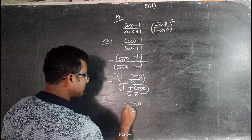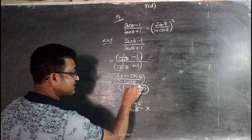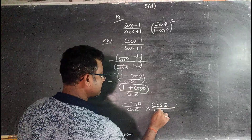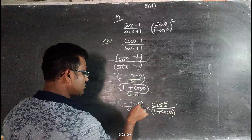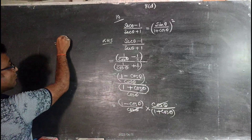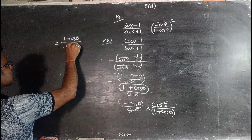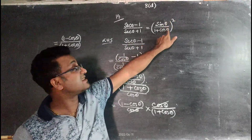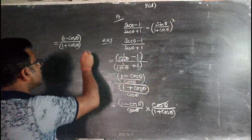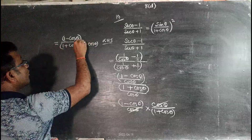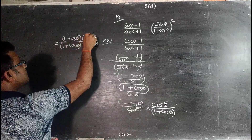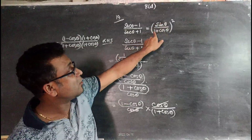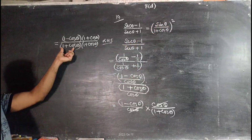Dividing the two fractions: (1 - cosθ)/cosθ ÷ (1 + cosθ)/cosθ. The cosθ terms cancel, giving (1 - cosθ)/(1 + cosθ). The right hand side requires (1 + cosθ)², so we multiply numerator and denominator by (1 + cosθ).